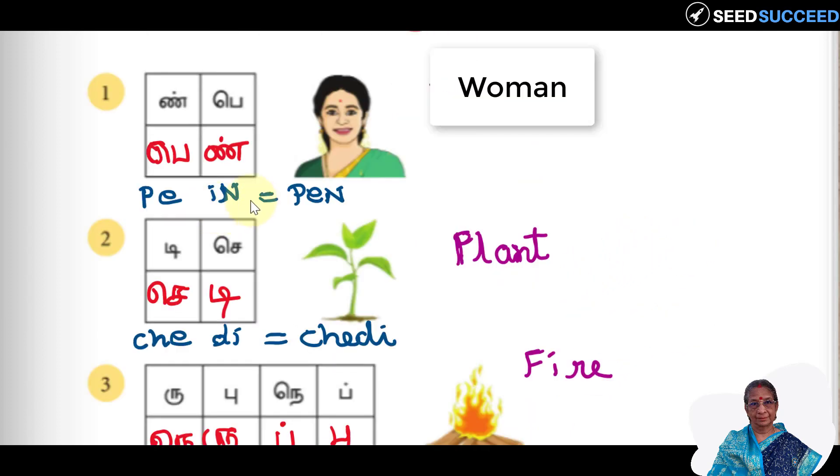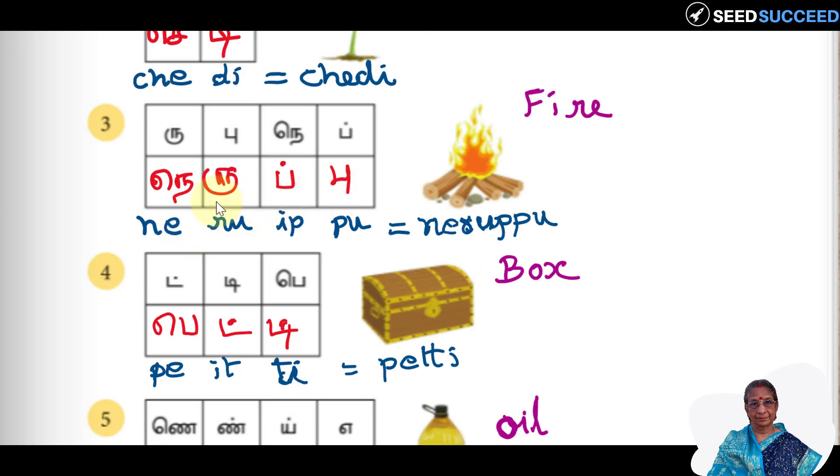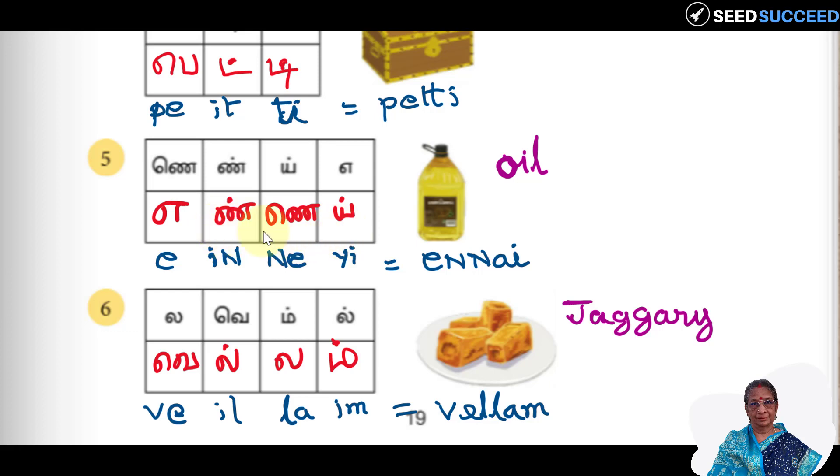Let us go through it again. Let's repeat it. Pe in pen, woman. Che di chedi, plant. Ne roo ippu nerupu, fire. Pay it ti petty, box. E in ne e ennai, oil. Ve il la im vellam, jaggery.